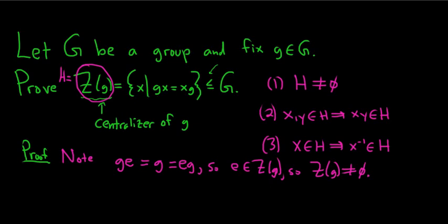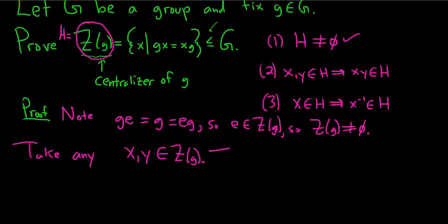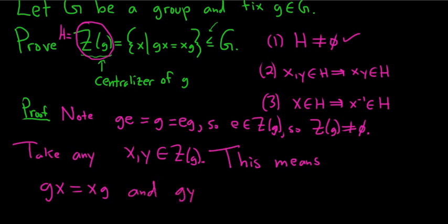The centralizer is obviously a subset of G. Now we have to show it's closed under the group operation. Take any x, y in the centralizer of little g. This means gx equals xg — little x commutes with little g — and gy equals yg — little y commutes with little g. That's what it means for an element to be in the centralizer. Now we have to show the product xy is also in the centralizer.